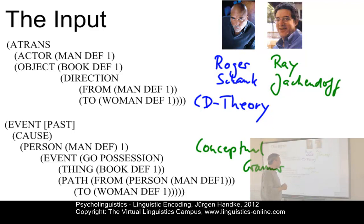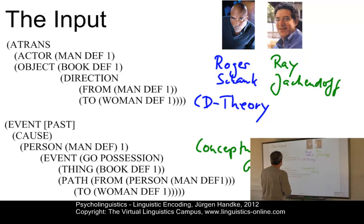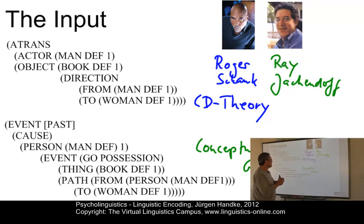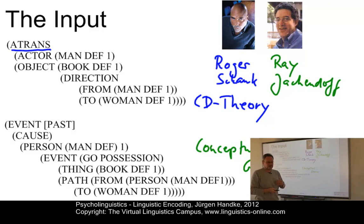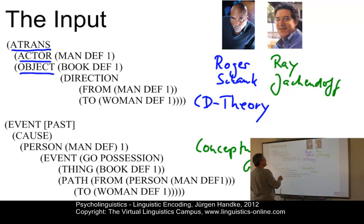Both representations stand for the same sentence: the man gives — or gave, depending on what sort of attribute you include — the book to the woman, or the man gives the woman the book. In Shank's approach, you have a template which defines the act of giving as an act of abstract transfer, A-TRANS. You have an actor, which is normally the subject of the sentence, the object of giving which is the book, and a direction from the man, the actor, to the recipient, the woman.